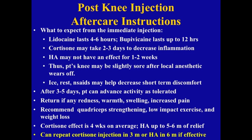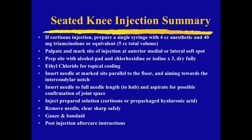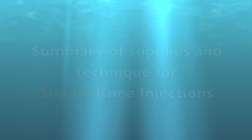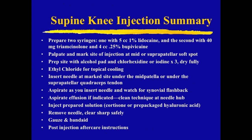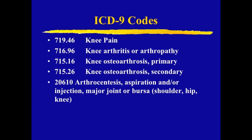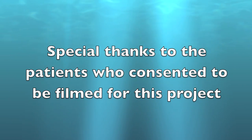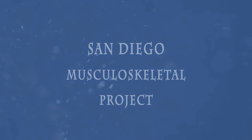If the injections were effective, a cortisone injection can be repeated in three months and the hyaluronic acid injection can be repeated after six months. The next set of slides are included as a reference with a summary of supplies and procedure steps for both seated and supine knee injections — you can pause the video and print screenshots for future use in clinic. An example procedure note is also included, along with procedure ICD-9 codes for knee arthritis diagnosis and injection. This concludes part three of our three-part knee injection series. This video is brought to you by the San Diego Musculoskeletal Project — for more videos, please see the SD MSK Project YouTube channel.